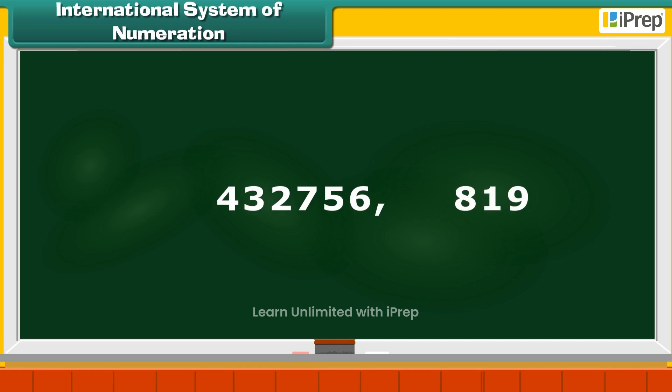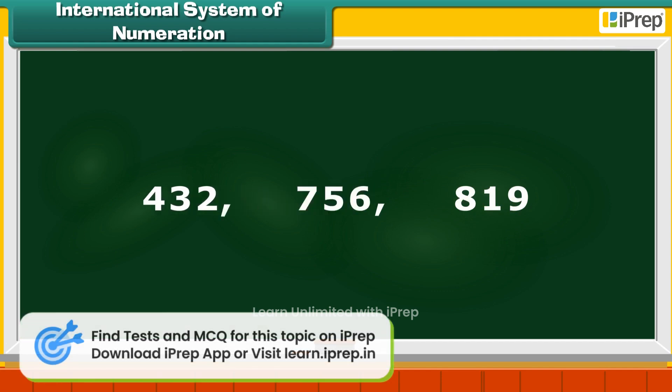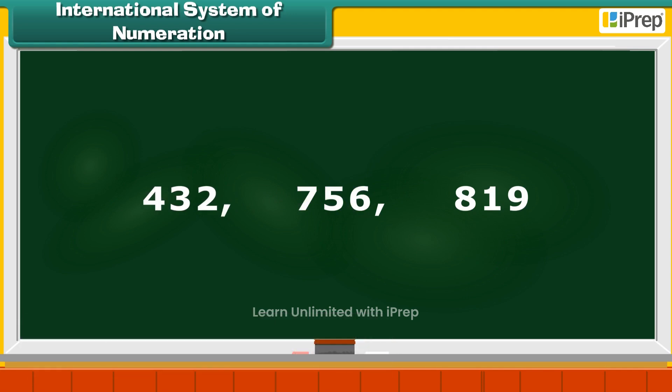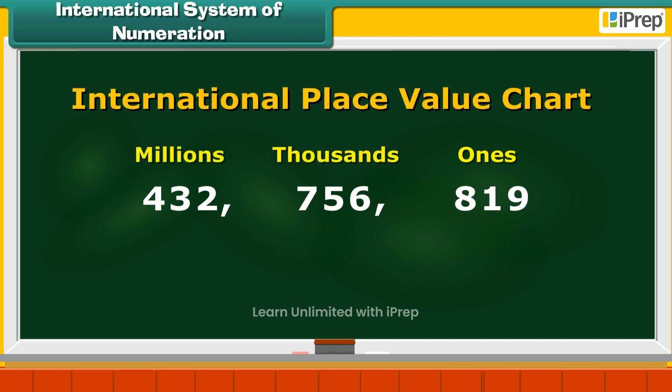Thus, we have three groups: Ones, Thousands and Millions. This is the International Place Value Chart.